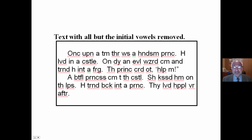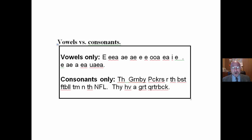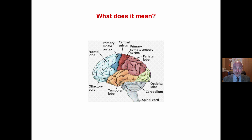Think about texts with all but the initial vowels removed: 'Once upon a time there was a handsome prince.' We can still read it. Letters are important, but not that important. What about vowels? When shown vowels only, you cannot create meaning. But with just the consonants — 'The Green Bay Packers are the best football team in the NFL. They have a great quarterback.' — yes, you can. So obsessing over diphthongs and phonics scope and sequence is not really necessary.